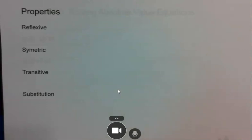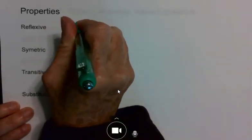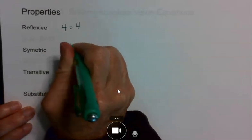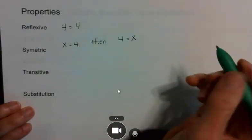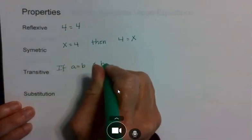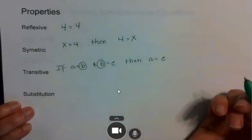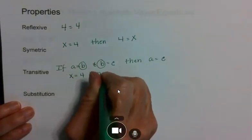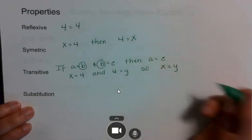You have some more properties. The reflexive property — like looking in a mirror — just says 4 equals 4. The symmetric property means you can switch sides of an equation: if x equals 4, it is legal to say 4 equals x. The transitive property says if a equals b and b equals c, then a equals c — there's a tie between the two equations. So if x equals 4 and 4 equals y, you can conclude x equals y.